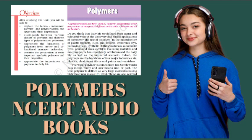First, elastomers. These are rubber-like solids with elastic properties. In these elastomeric polymers, the polymer chains are held together by the weakest intermolecular forces. These weak binding forces permit the polymer to be stretched. A few cross-links are introduced in between the chains, which help the polymer to retract to its original position after the force is released, as in vulcanized rubber. The examples are Buna-S, Buna-N, neoprene, etc.